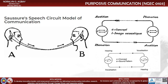Saussure believes that the sound pattern formed by the brain is different from the actual sound produced by the mouth and heard by the ear. This is supported by the fact that there are different sounds but with the same sound pattern. For example, T and D are two different sounds in English, but for Chinese speakers, T and D are the same. Similarly, K and G are two different sounds in English but are used as the same in Korean.